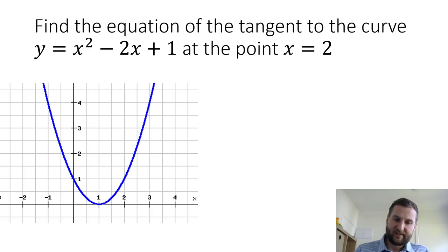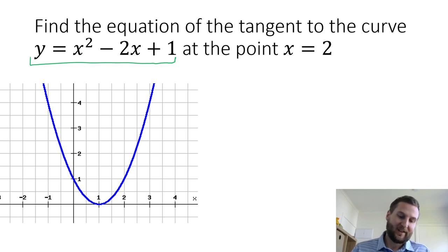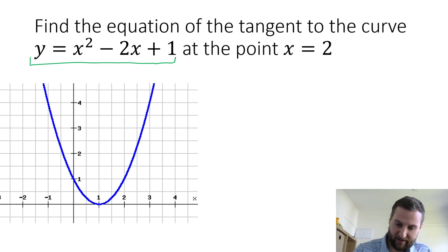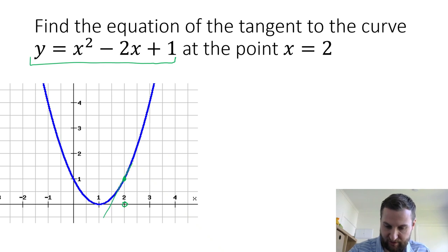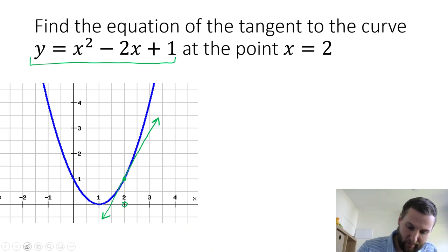Find the equation of the tangent. Here is my curve — a parabola — and I'm given a point at x equals 2. The slope changes at every single point, so we need that starting point. At x equals 2, I come up to the curve and sketch a tangent line, only touching that curve at one point.